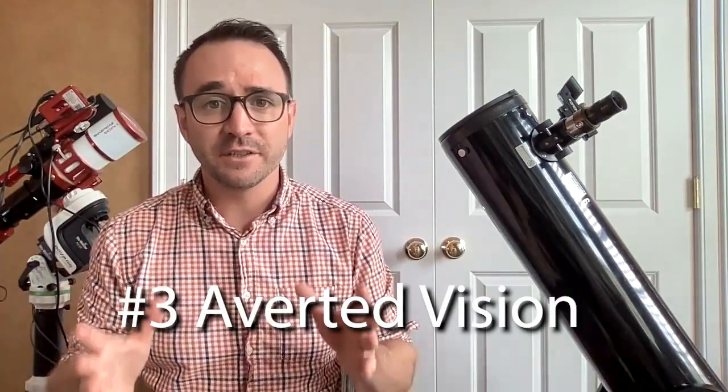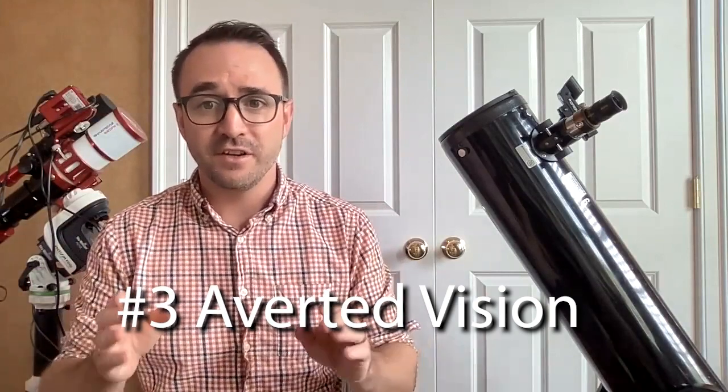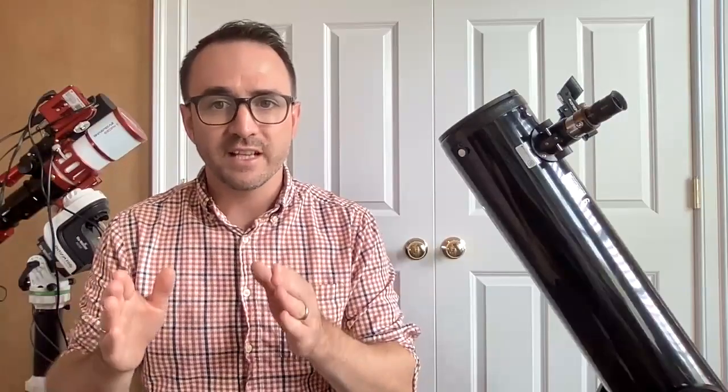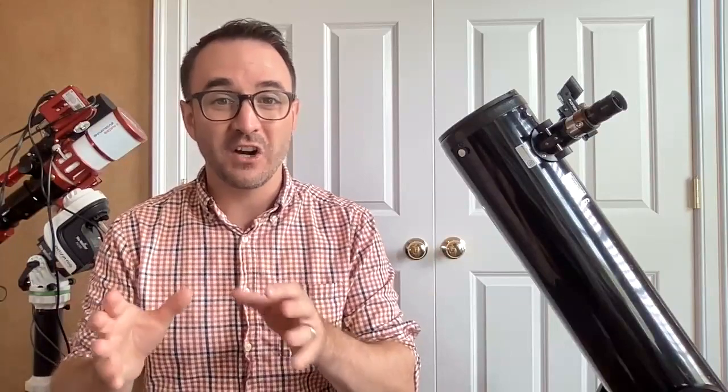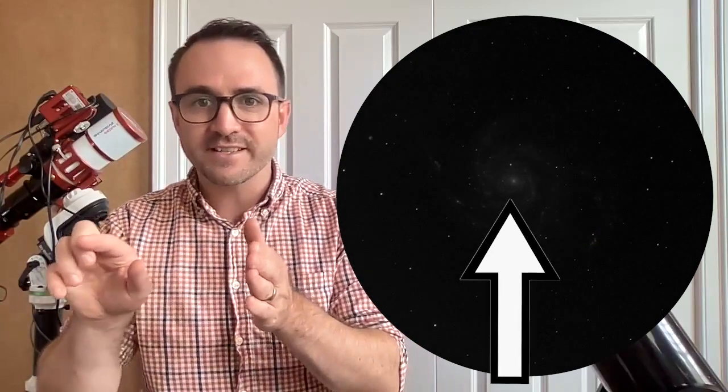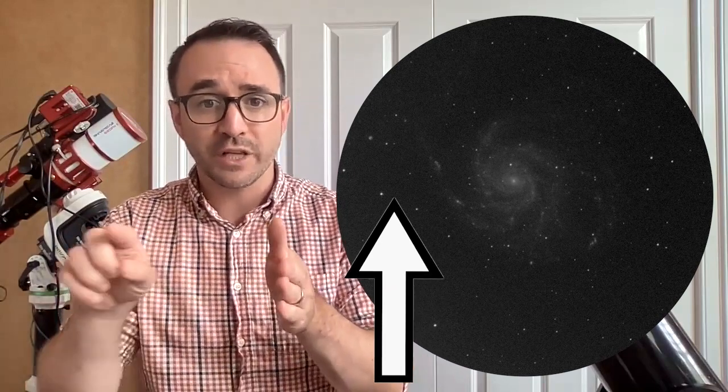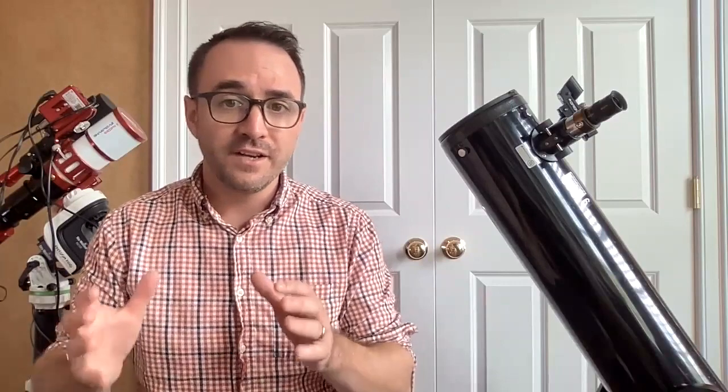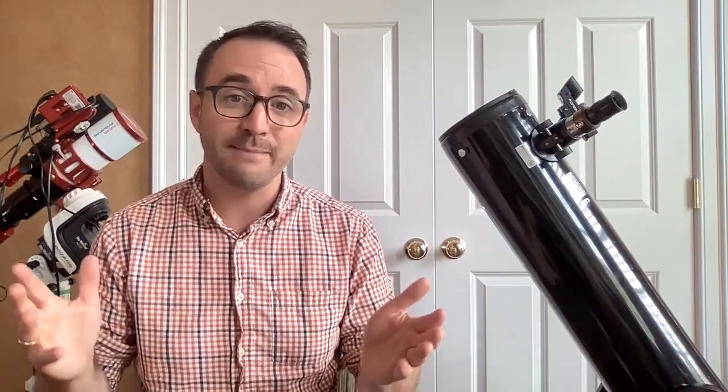The third tip is that you need to learn to use averted vision. This means not looking directly at your target through the eyepiece. The strategy is as follows: point the telescope exactly where you believe the object to be so that the target is hypothetically centered in the eyepiece. Then look through your eyepiece, but off to the side. If the object is within your telescope's field of view, it should appear brighter when you're looking to the side. For some targets, you might find that you can only see the object using this strategy. Another strategy for seeing more detail is to lightly tap or shake the telescope. The idea here is to allow the light to fall randomly on more sensitive regions of your eye. We call this the tap-tap trick.